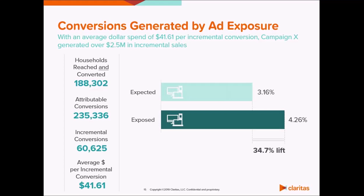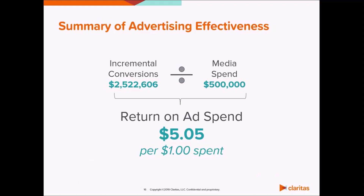In this case, we see a difference in conversion rates of 1.1 percentage points, which translates to a 34.7% lift, and that 34.7% lift translates into $2.5 million in incremental revenue. Now that we have incremental conversions — which are the conversions directly generated by exposure to advertising — we can calculate the return on ad spend. This is a metric of efficiency that creates a standardized view of campaign performance, telling us how many incremental conversions were generated from each dollar spent on the campaign. Return on ad spend can be presented as visits per dollar spent, sales per dollar spent, or engagements per dollar spent, just to name a few.